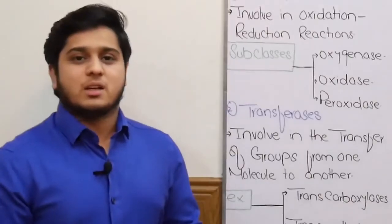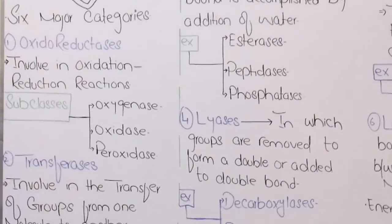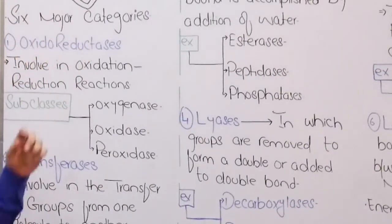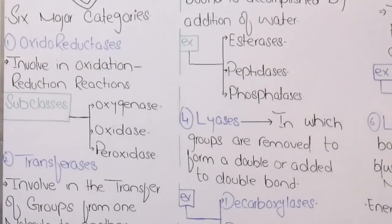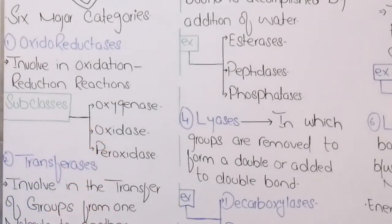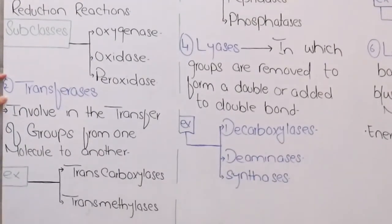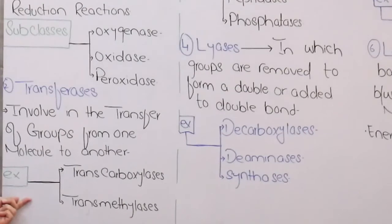Next, we will talk about enzyme nomenclature — there are six categories. The first is oxidoreductases: these are enzymes involved in oxidation and reduction reactions. Examples include oxygenases, oxidases, and peroxidases. The second category is transferases: these enzymes are involved in the transfer of groups from one molecule to another. Examples are transcarboxylases and transmethylases.